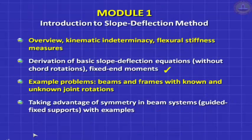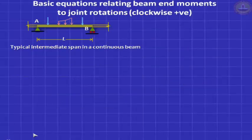We go to the next topic of deriving the slope deflection equation, in a case where there is no chord rotation, no support settlement. We are looking at a continuous beam and putting all our attention to one element, say AB, which could be subjected to any arbitrary loading — concentrated loads, distributed loads, it does not matter.